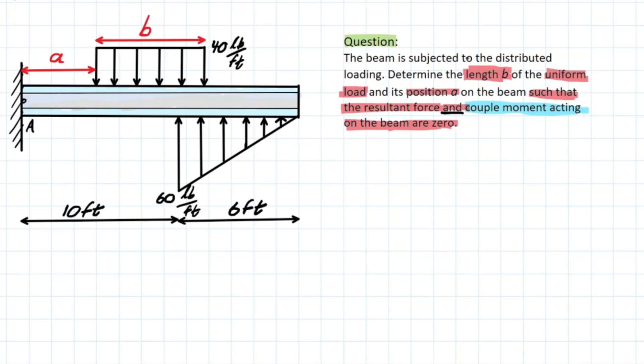So the question goes: the beam is subjected to the distributed loading, this one here and this one here, rectangular, triangular. Determine the length B of the uniform load and its position A on the beam, such that resultant force and couple moment acting on the beam are zero.